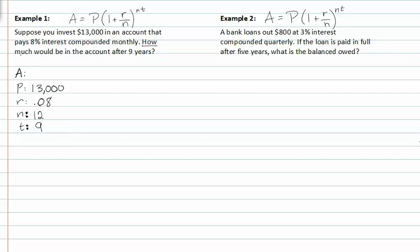If they want to know how much would be in the account, that's the amount at the end, A. That's what we're looking for. So we'll just put everything into our equation now that we have all the different pieces. R is 0.08 over N, which is 12, raised to the N times T, which is 9.